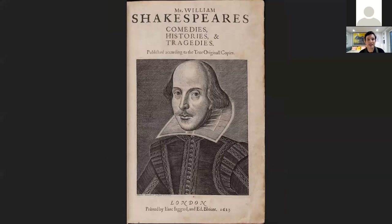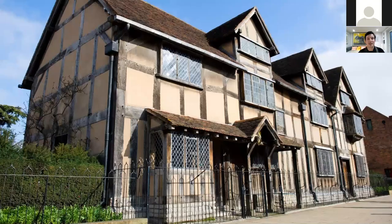This is one of the most likely images of Shakespeare that can actually capture his original look. It's taken from the First Folio of his works, published by some friends of his — Henry Condell and John Hemming — in 1623.